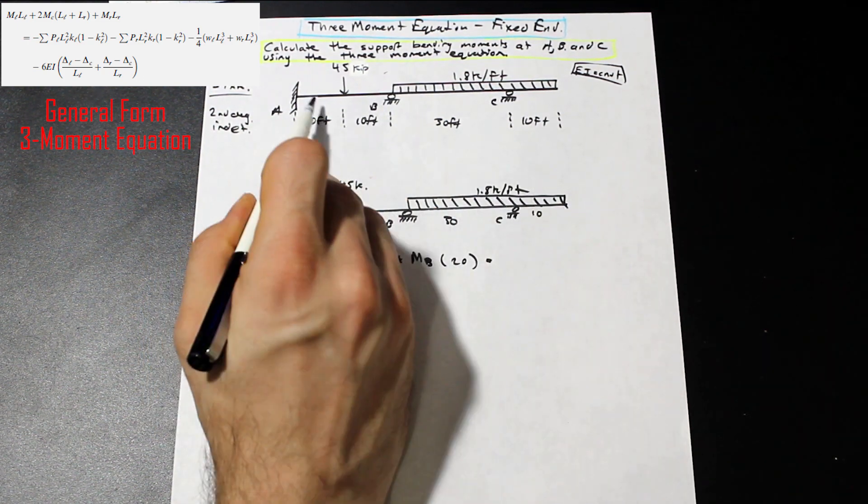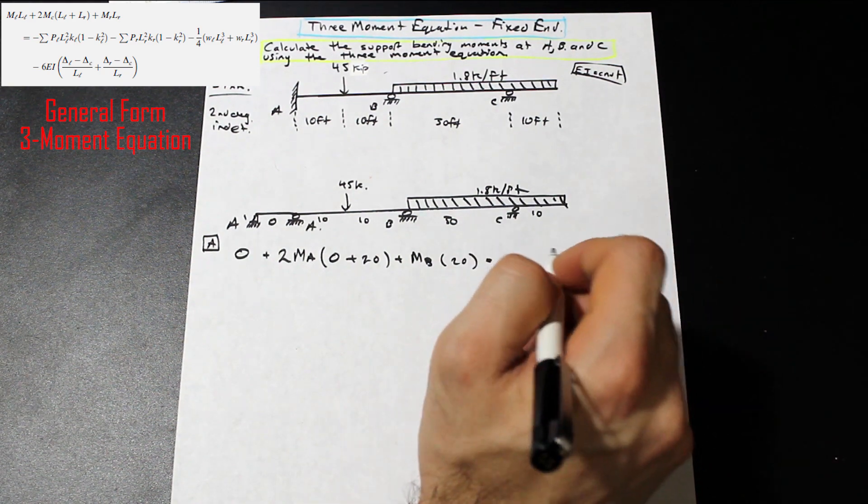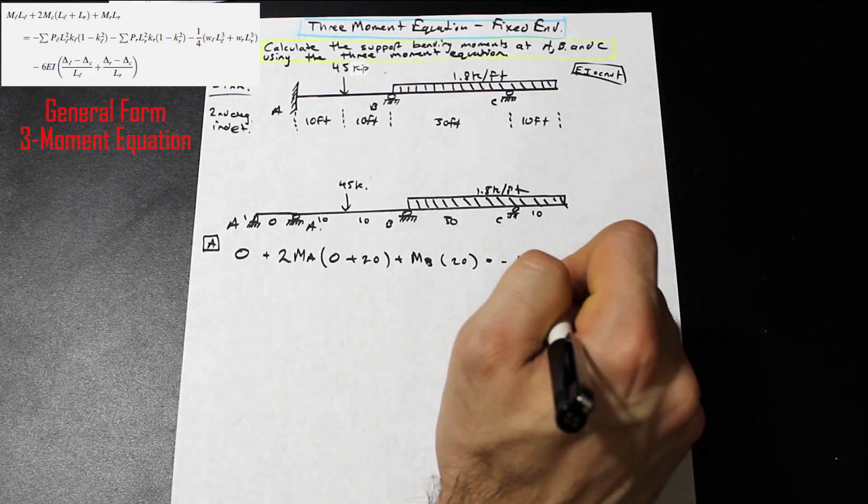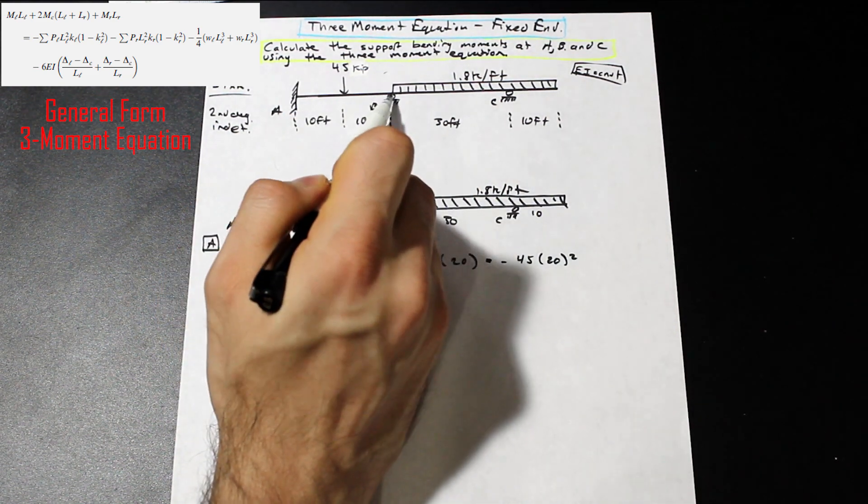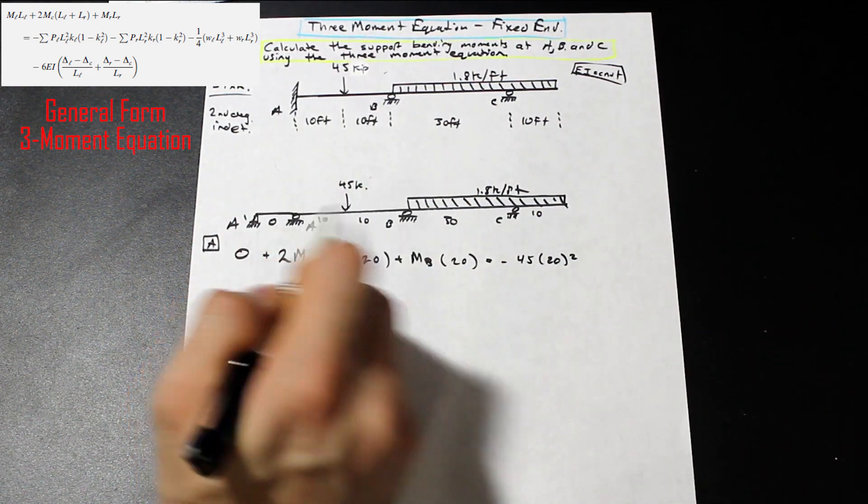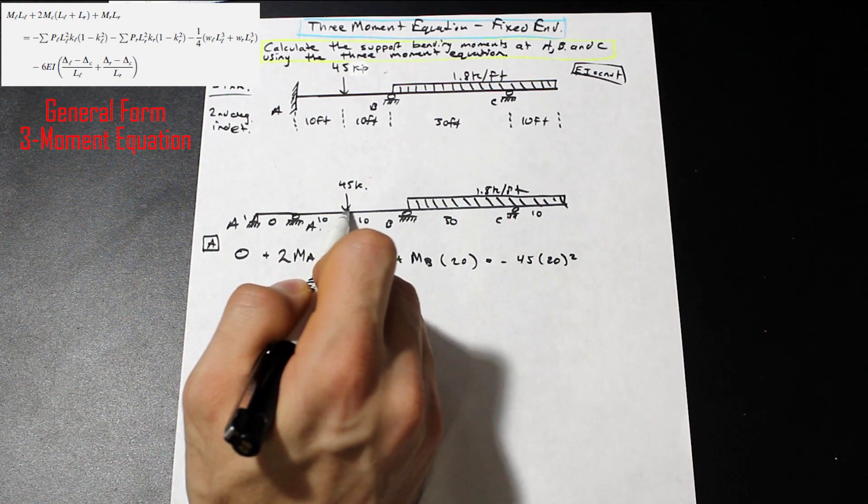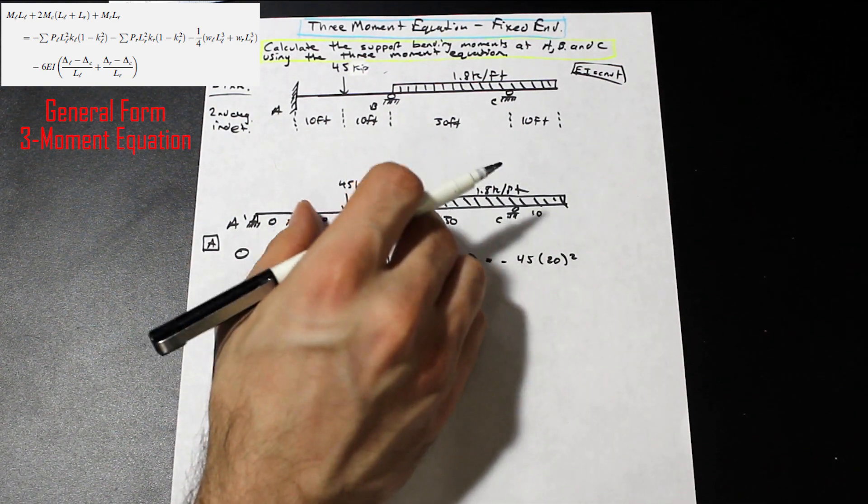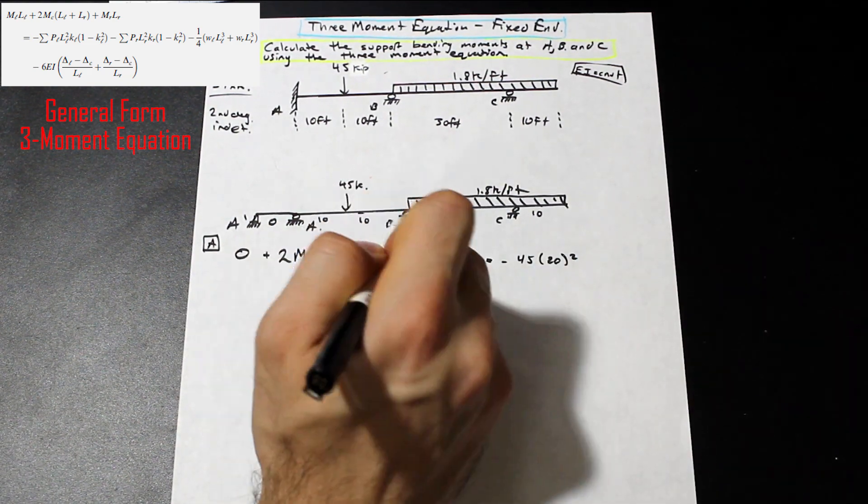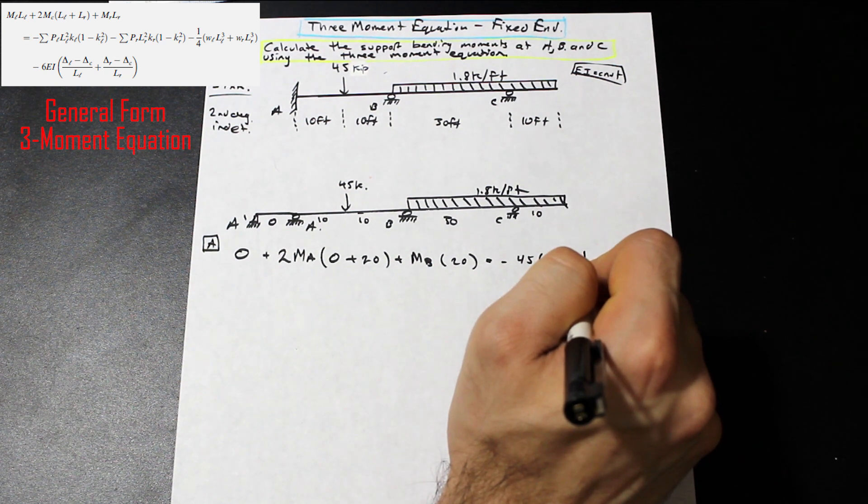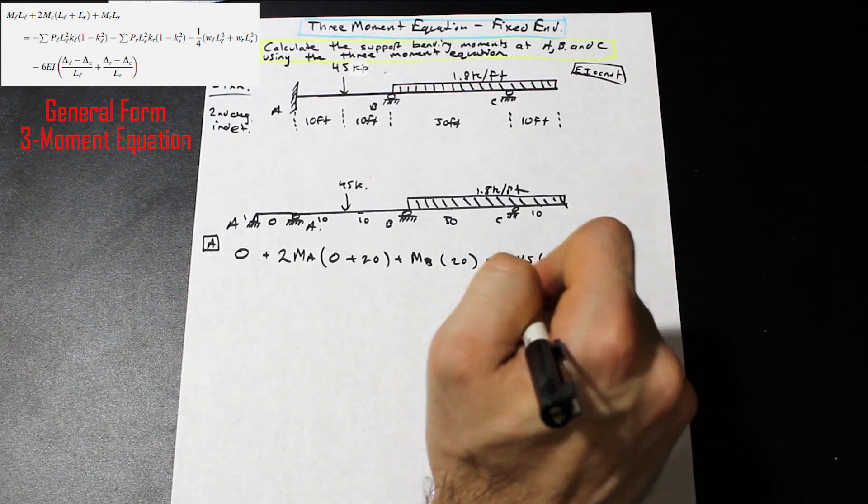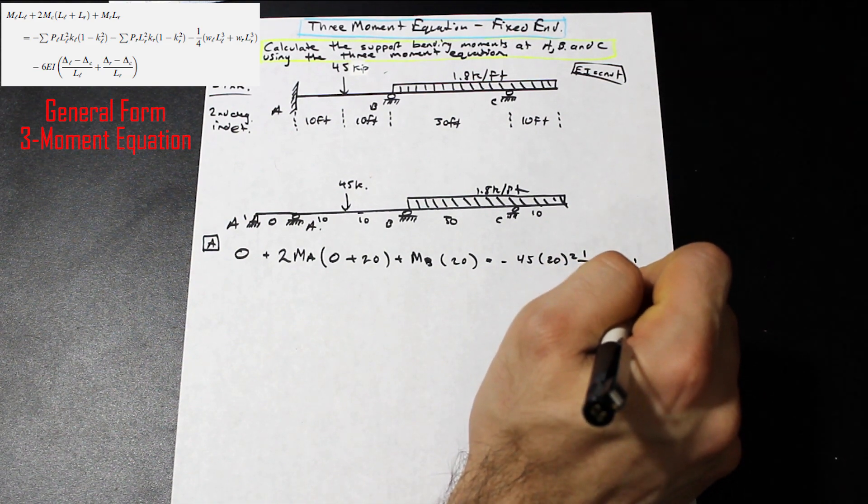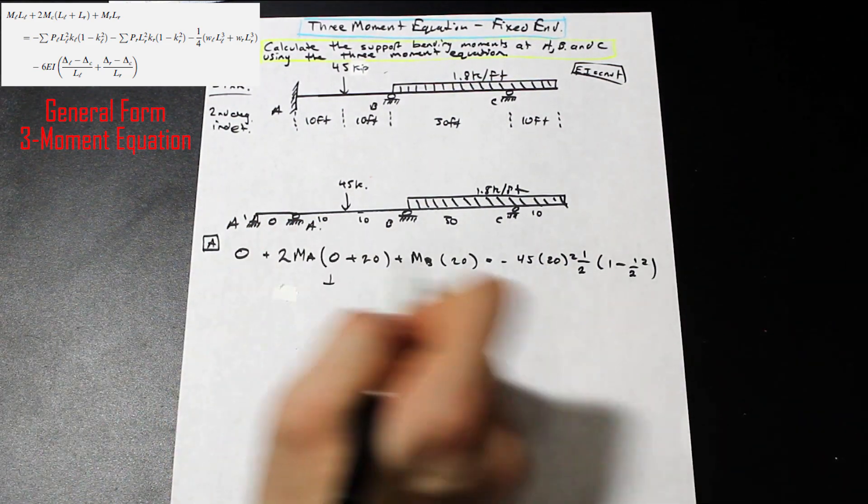And we have LL over IL plus LR over IR. Remember that I is constant in this case, so it's going to cancel. Zero is the length on the left, to the left of A. To the right of A, the length is 20. And we have MR, which is going to be MB. And that's going to be multiplied by 20. Let's take a look at the right side of the equation. And as you can see, we have a point load here. We have negative P, which is 45, KL squared is the entire length here. So that's going to be 20 squared.